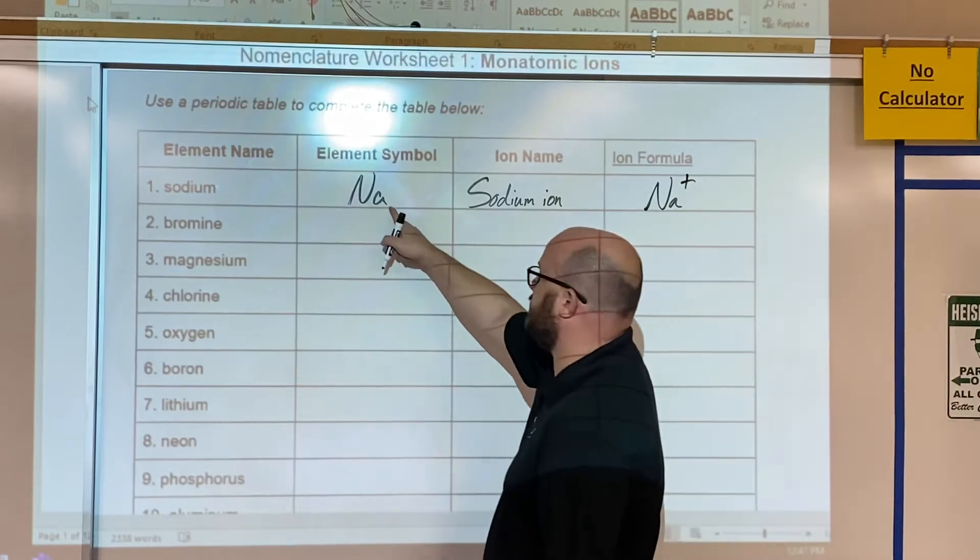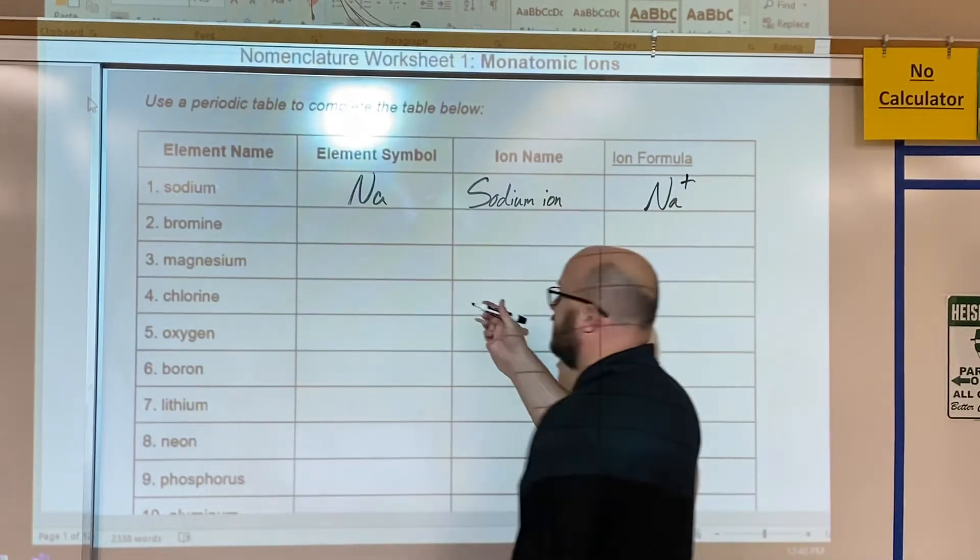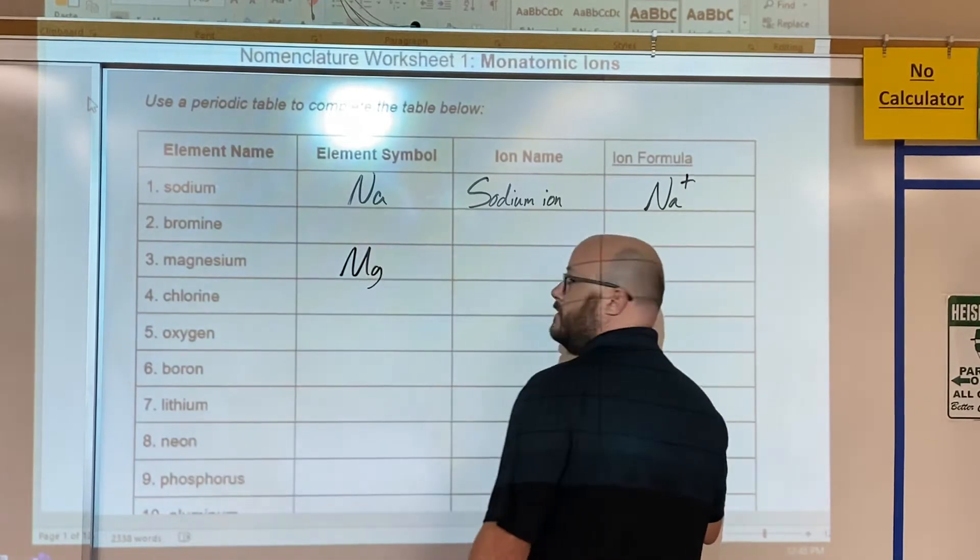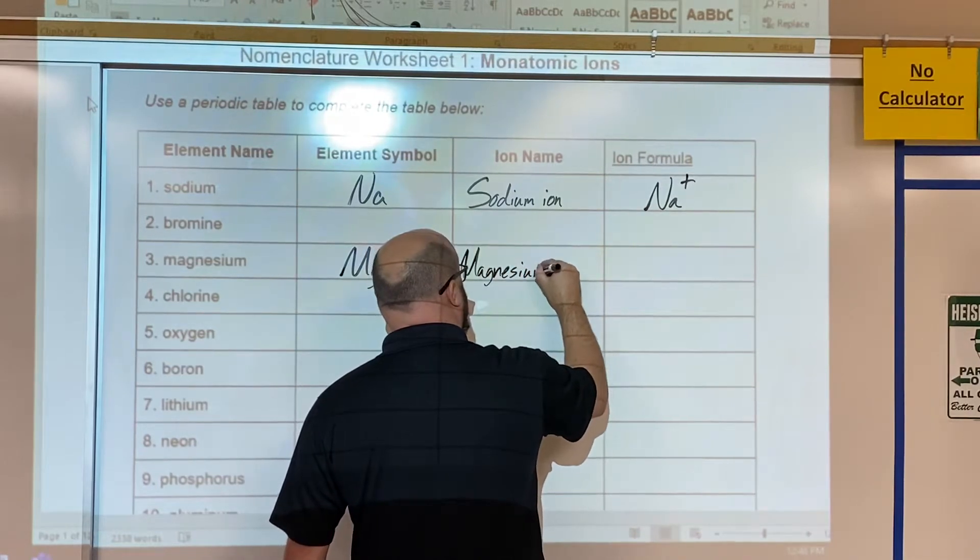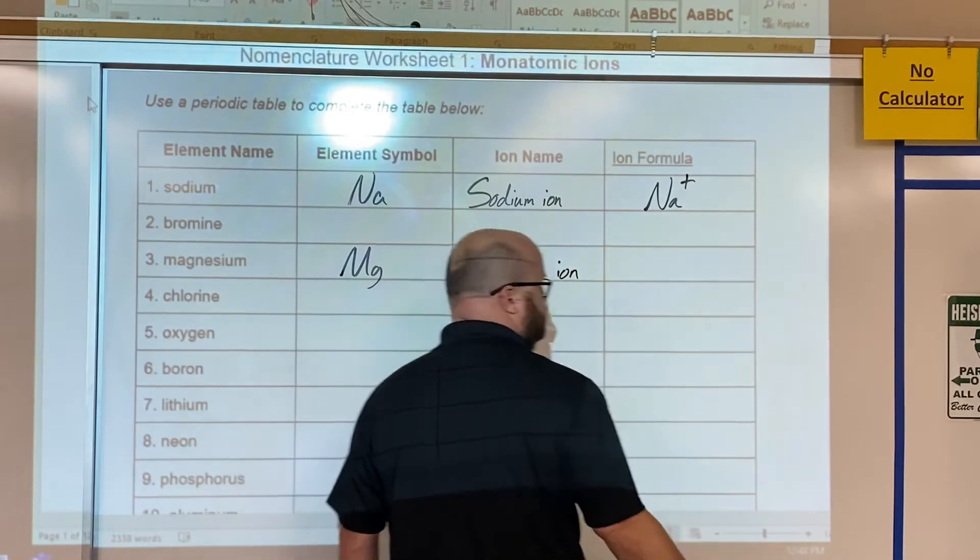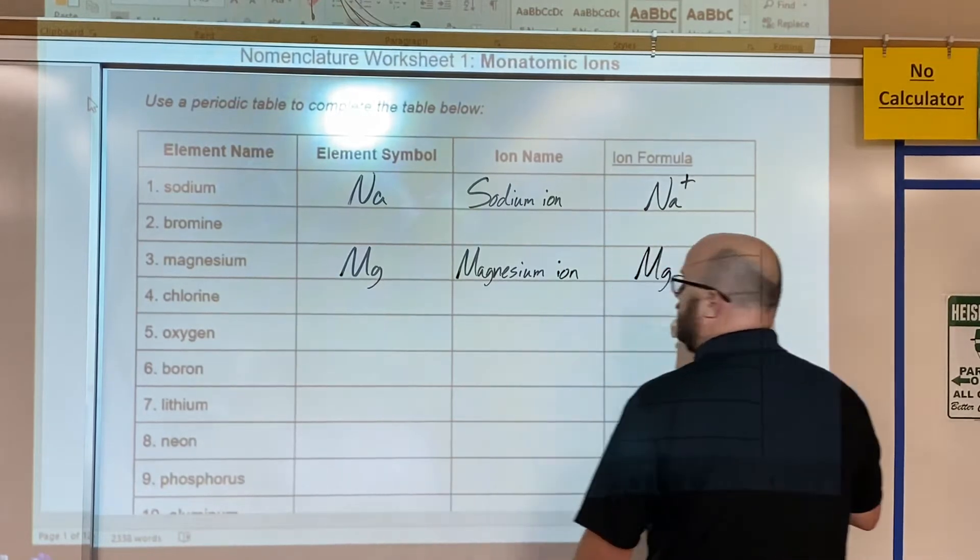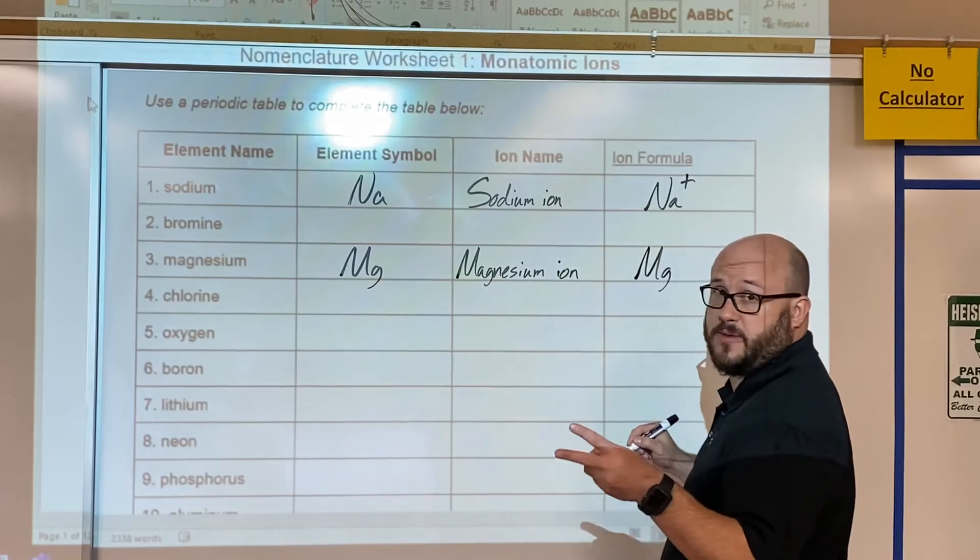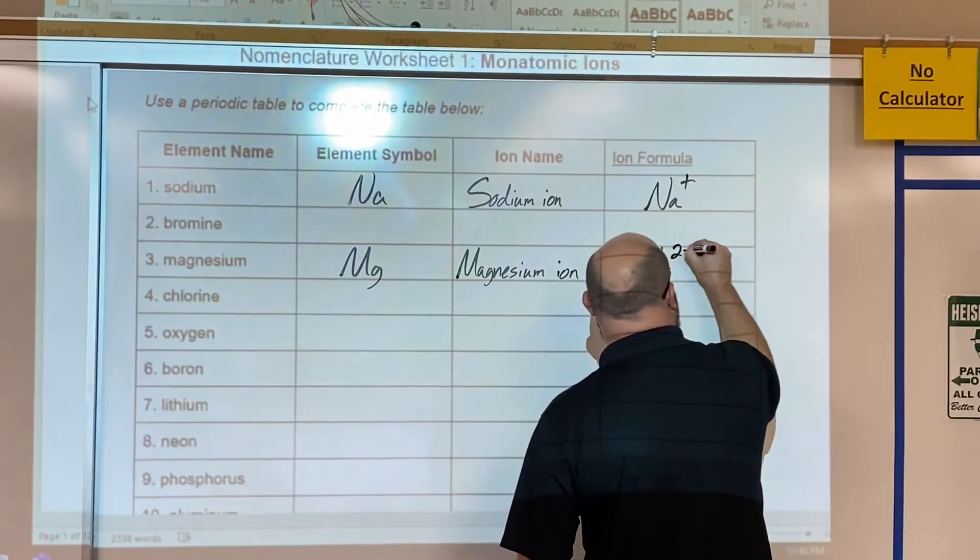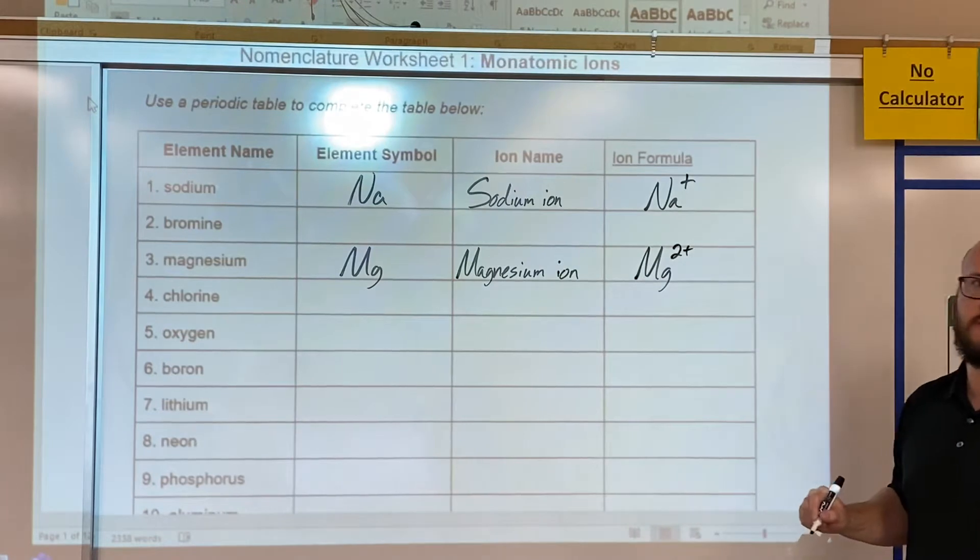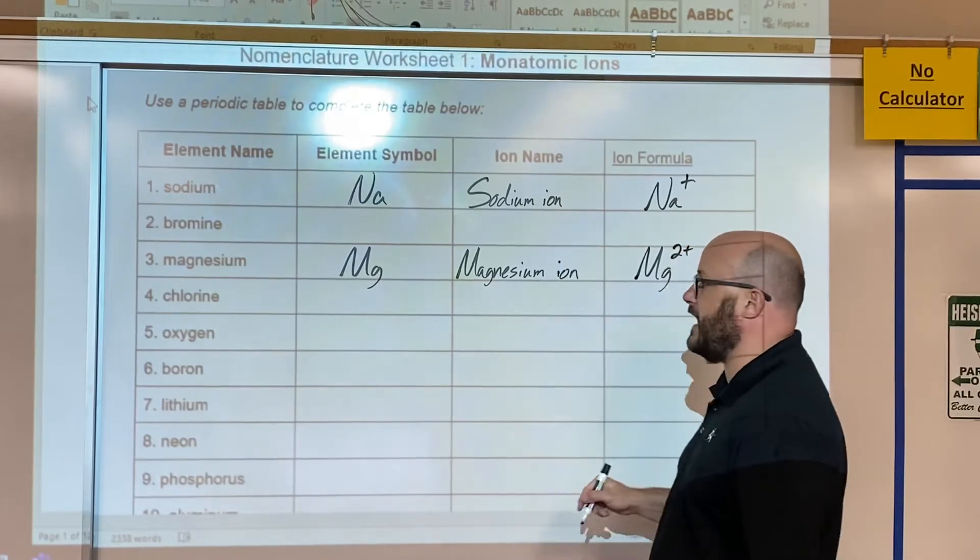Let's look at a different one, magnesium. Magnesium symbol is Mg. To write its ion name we're just going to say magnesium ion. For its formula, write its symbol Mg. It's in the second family, alkaline earth metals. It's going to lose two valence electrons and then have a full shell, so it's going to be a two plus ion. One plus, two plus, they're both cations. All we have to do is add the word ion after the name of the metal.